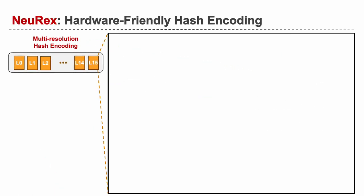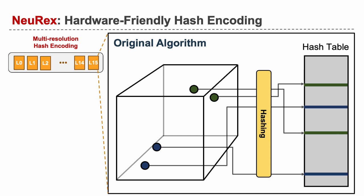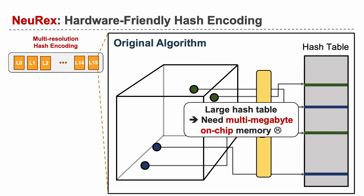To improve the performance of neural rendering, we propose an algorithm-hardware co-design in this work. In the original algorithm, the sampled points access the hash table using a global hash function. However, this leads to random accesses across the entire hash table, so the hardware needs to have a large on-chip memory to avoid irregular off-chip memory accesses.